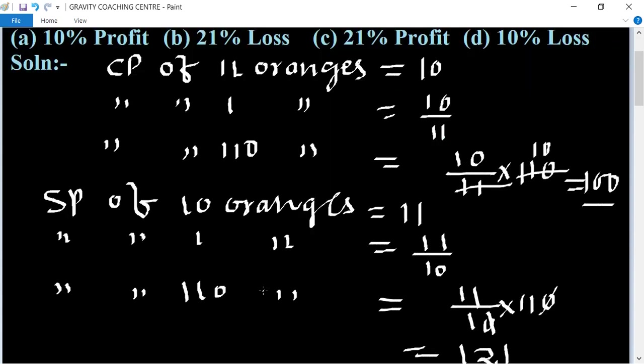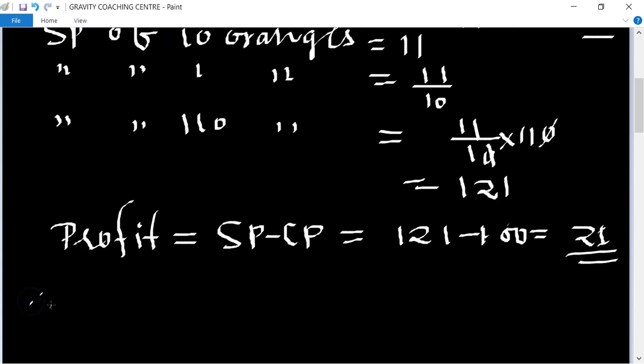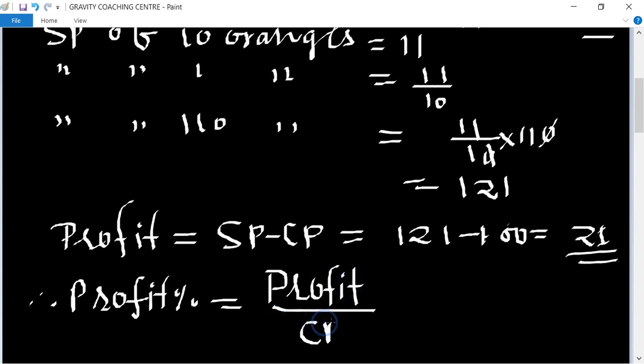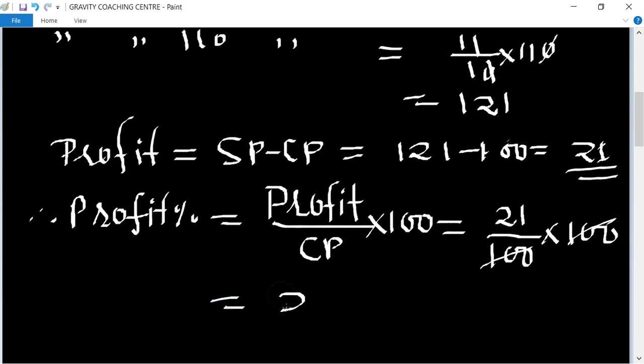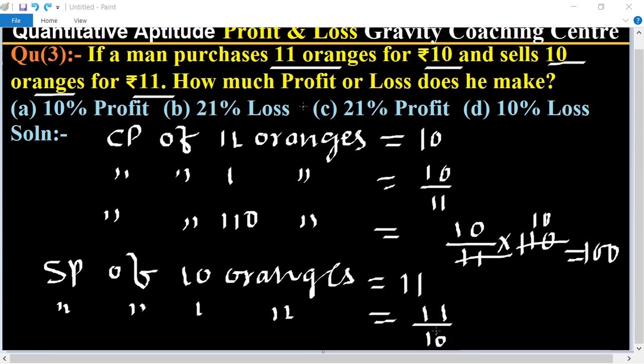So find its profit or loss percent. Therefore, profit percent equals profit upon CP multiply 100. Here profit is 21 and cost price equals 100, into 100. So 100 and 100 cancel, equal to 21 percent is the profit percent. So option C is the correct answer.